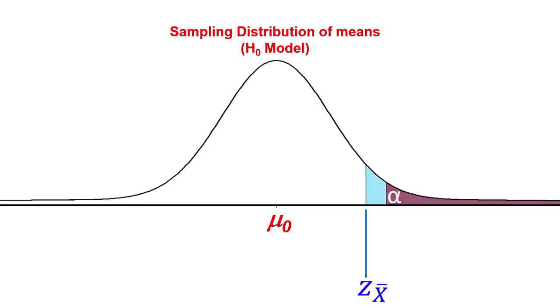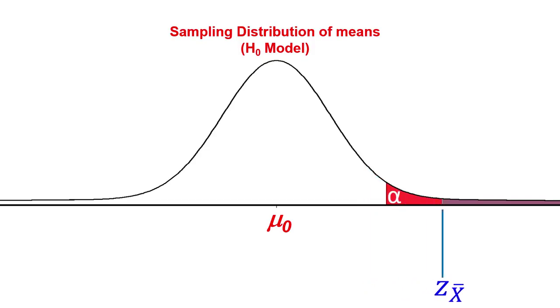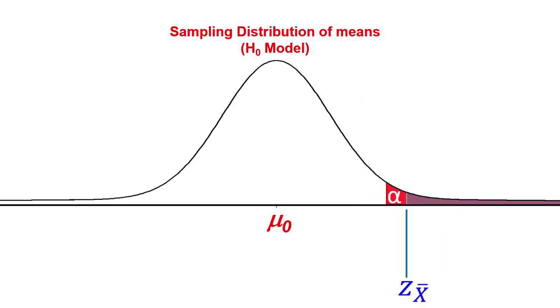We place our sample value in the distribution. If p is greater than alpha, we fail to reject the null hypothesis. If p is less than alpha, we reject it.